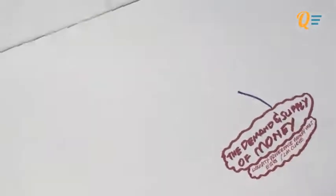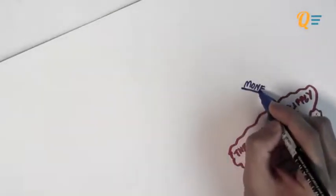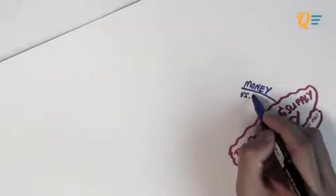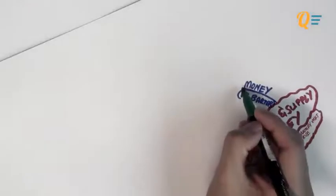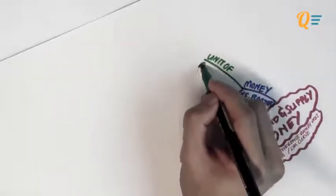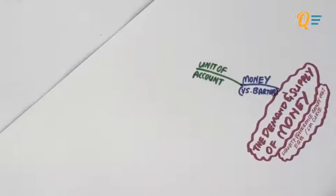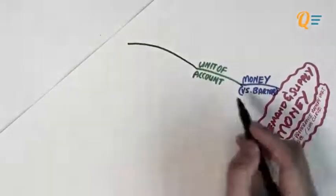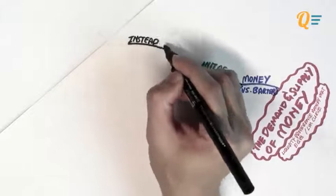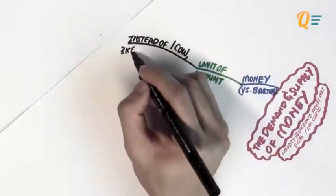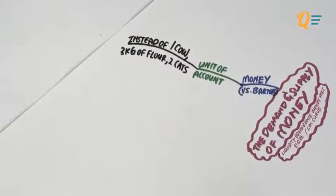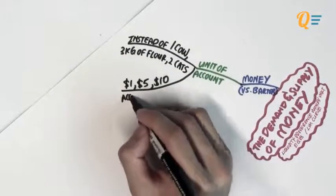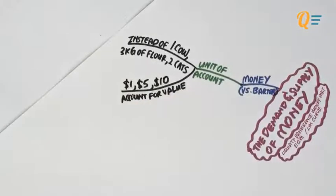I'm sure everybody knows what money is, but what we might not know is what are the functions of money from a macroeconomic perspective. When we talk about these functions, we're comparing money with barter trading — basically using goods and services to buy and sell certain goods and services. The first function of money is that it acts as a unit of account. So instead of using one cow, three kilograms of flour, and two cats to value certain goods and services, we can use a dollar, $5, or $10 to account for the value of those goods and services.